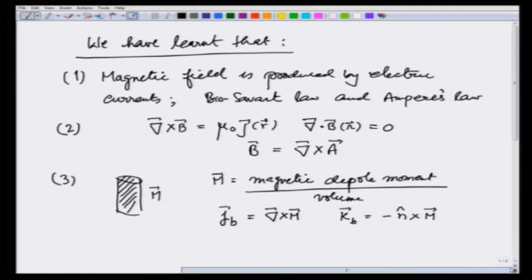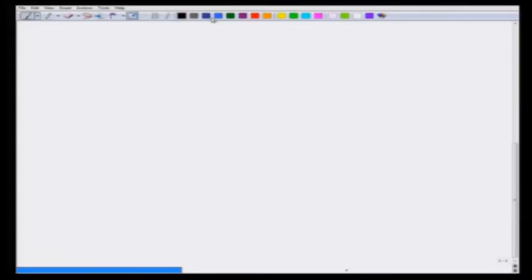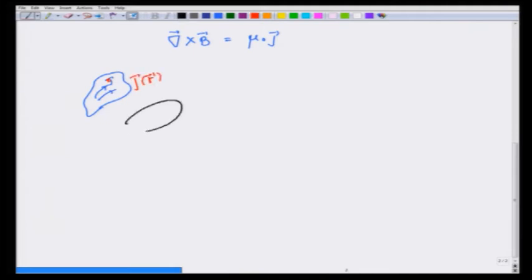What we want to do now is develop a machinery using these to deal with situations where there are magnetic materials that develop magnetic moment when a field is applied. To do this, let us start with the equation curl of B equals μ₀ j. In presence of currents, if there is a current density j, and there are magnetic materials that get magnetized and develop a magnetic moment M when put in these field, what happens then?